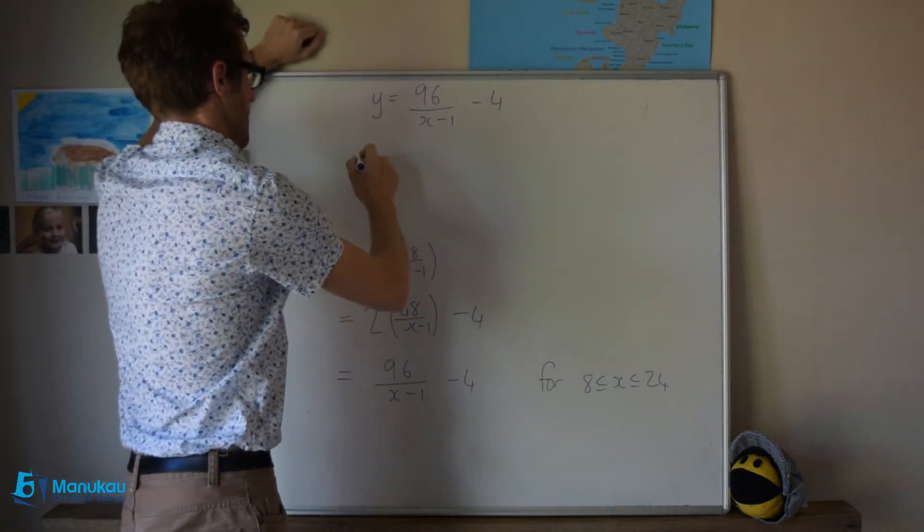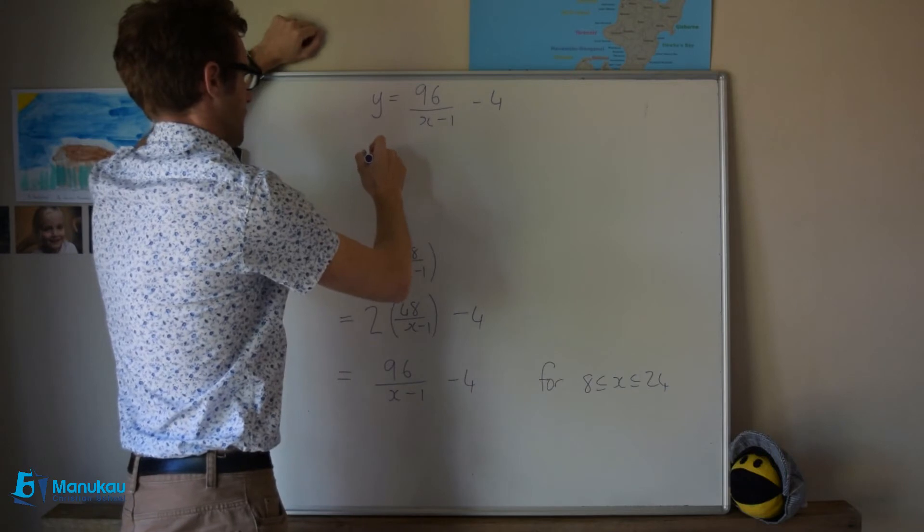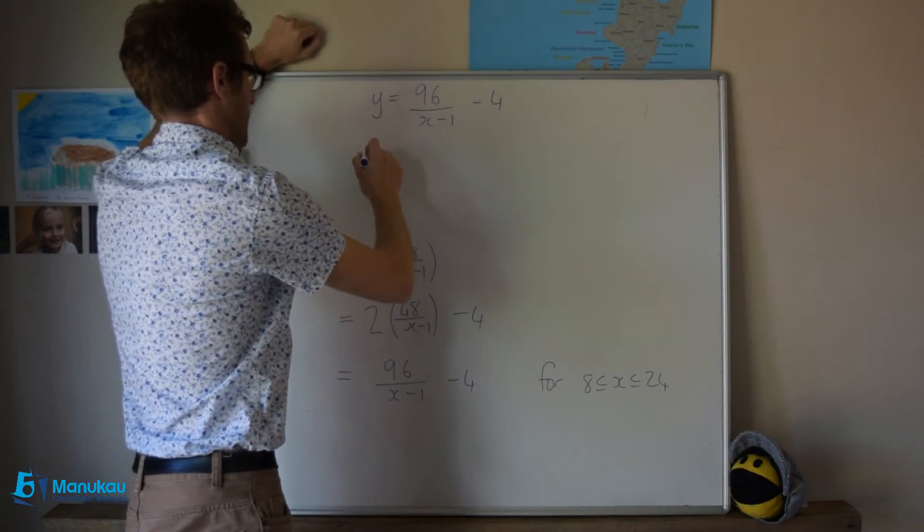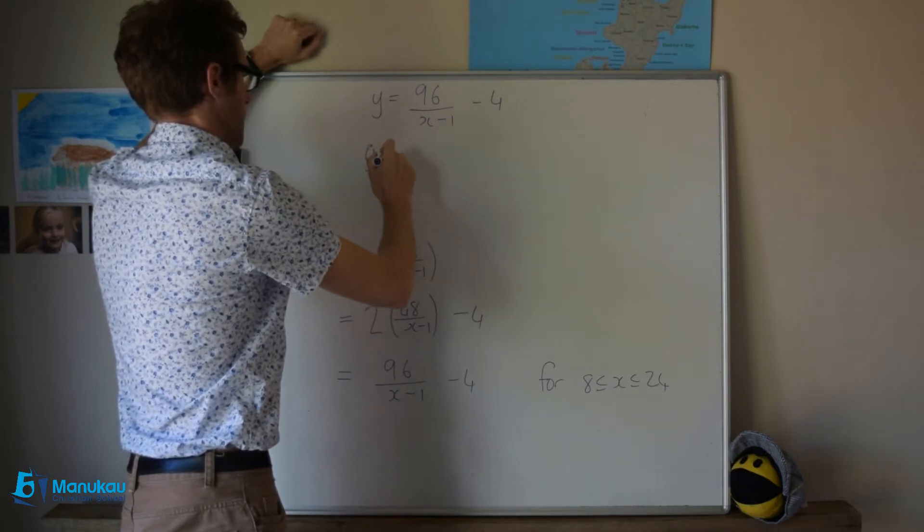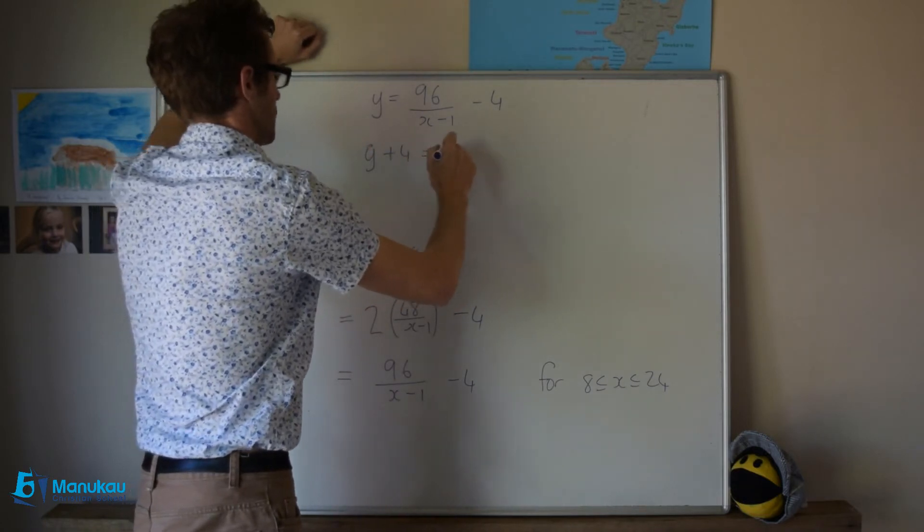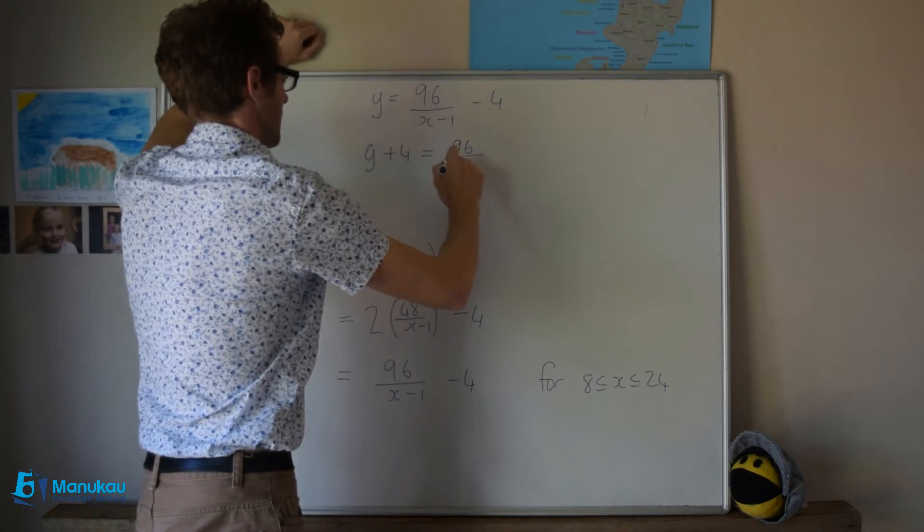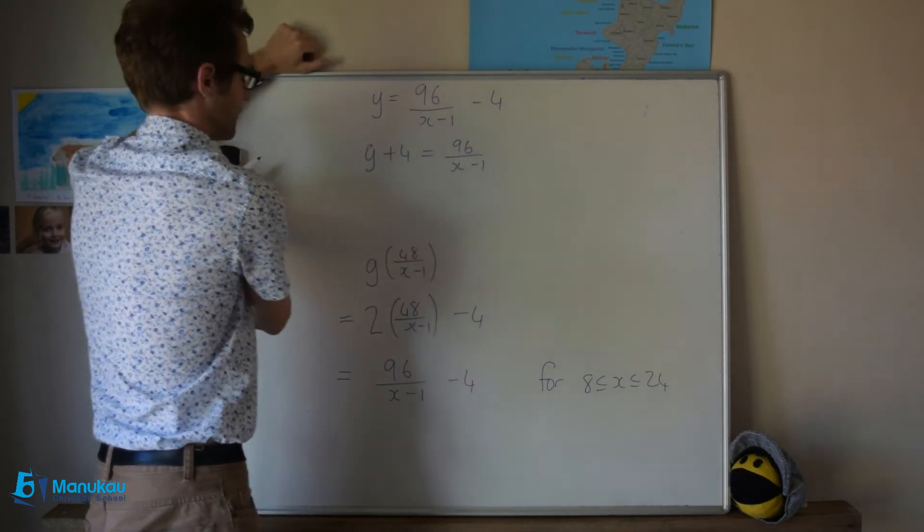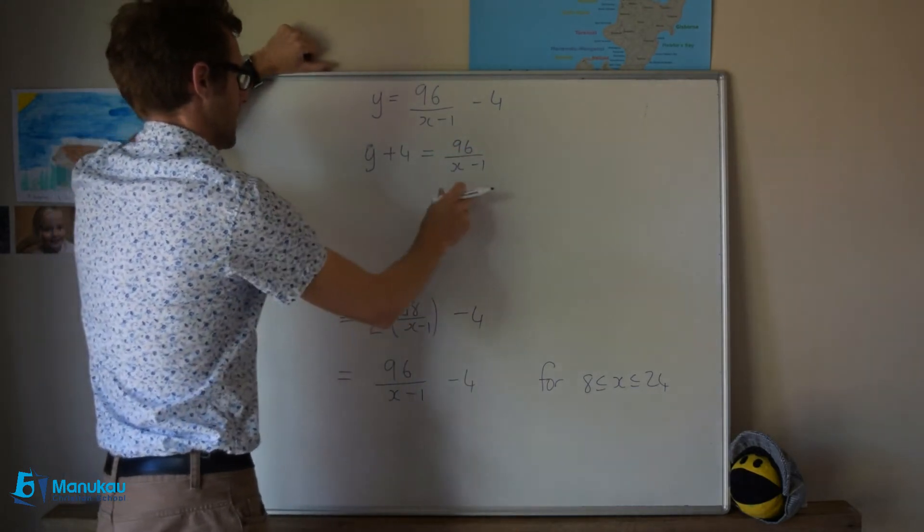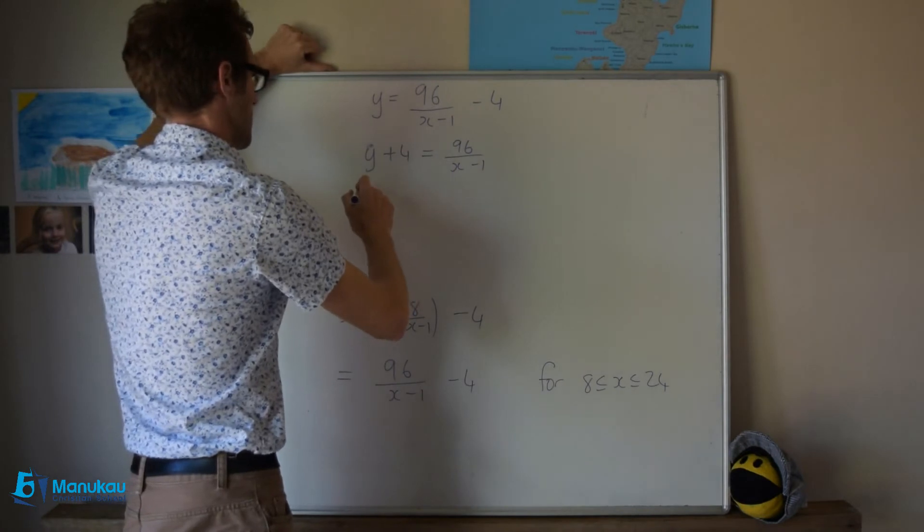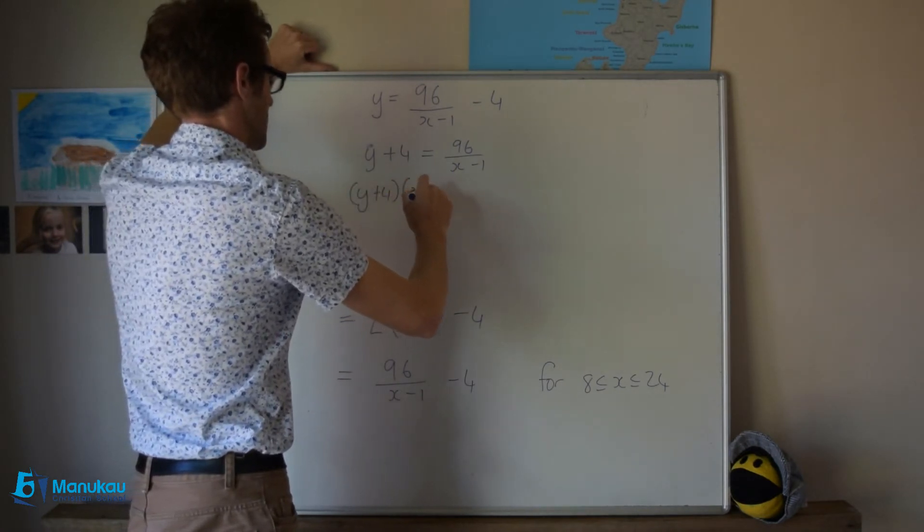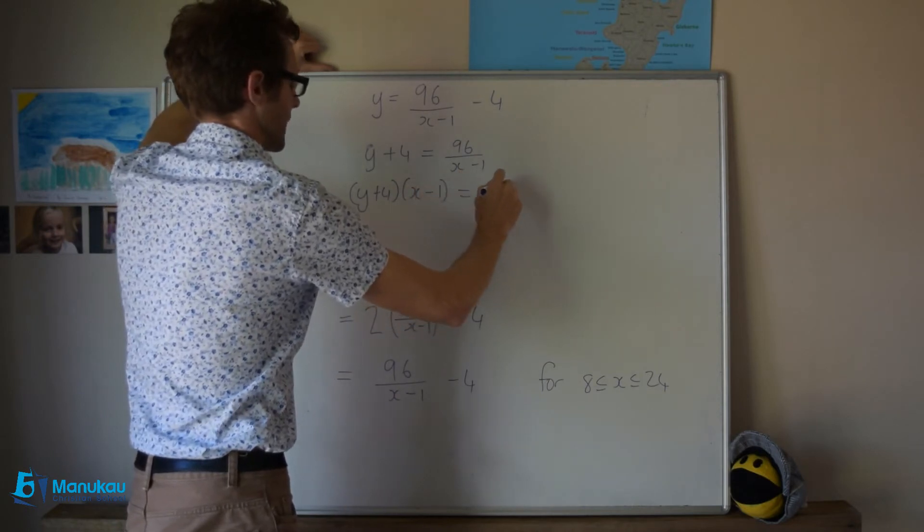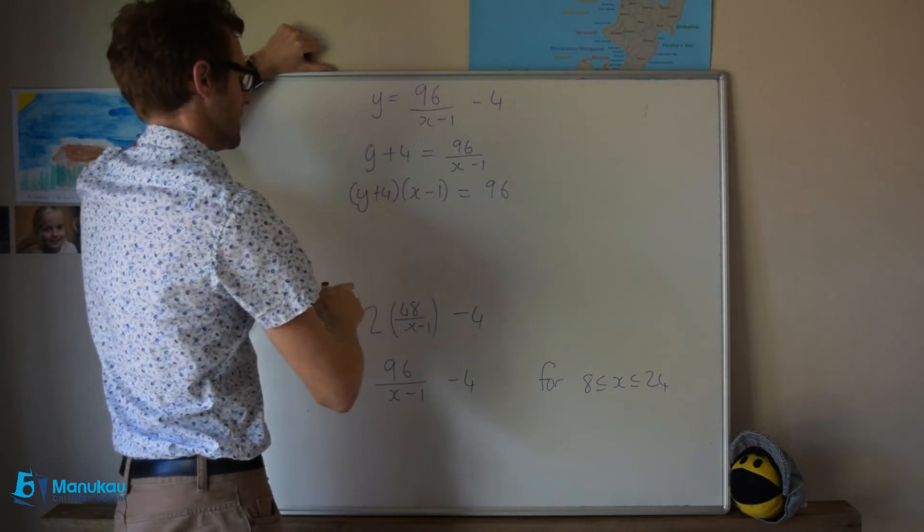So I will go y plus 4 is equal to 96 over x minus 1. At this point, I will go y plus 4 into x minus 1 is equal to 96. I've just multiplied both sides by this.